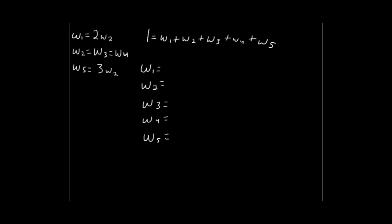I like doing these problems this way — it just makes things really easy I think. So here I'll read the problem again. It's a weighted probability problem where we know that all the probabilities together are going to add up to 1, which I've represented here: the weight of outcome 1 plus outcome 2 plus outcome 3 plus outcome 4 plus outcome 5 are all going to equal 1.